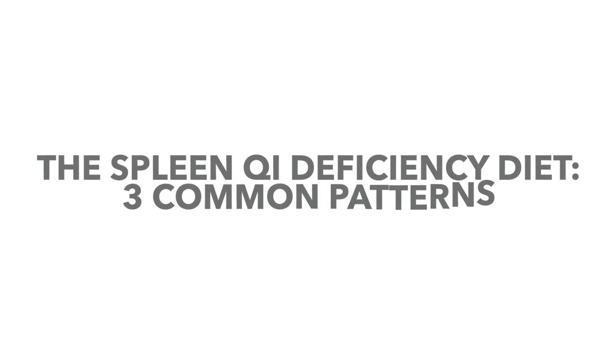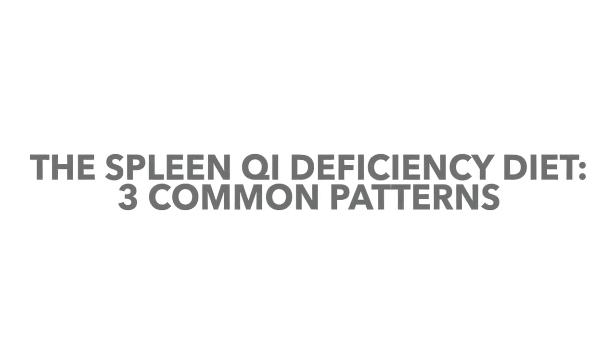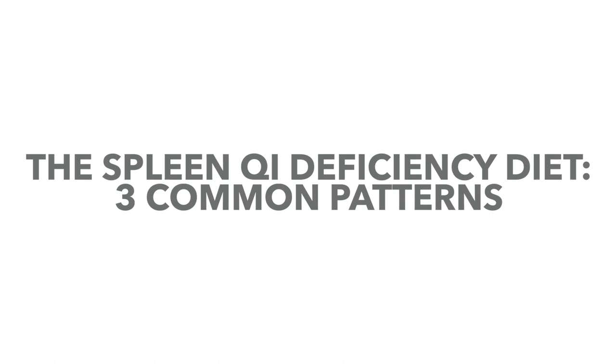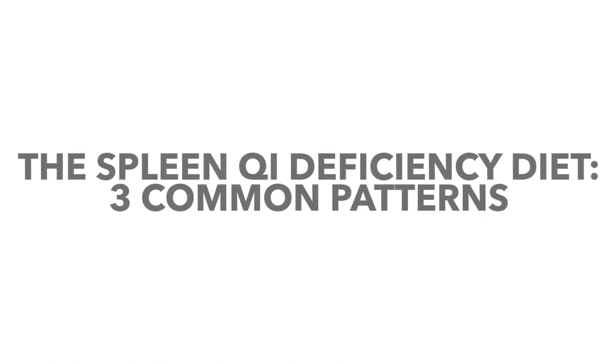Digestive problems are probably in the top three most common issues I see in my patient base. I got into Chinese medicine because of my own digestive problems. In this video I want to speak more on spleen chi deficiency being one of the most common digestive patterns, and three subclasses or similar patterns to spleen chi deficiency, because these are the three most common GI patterns that I see.